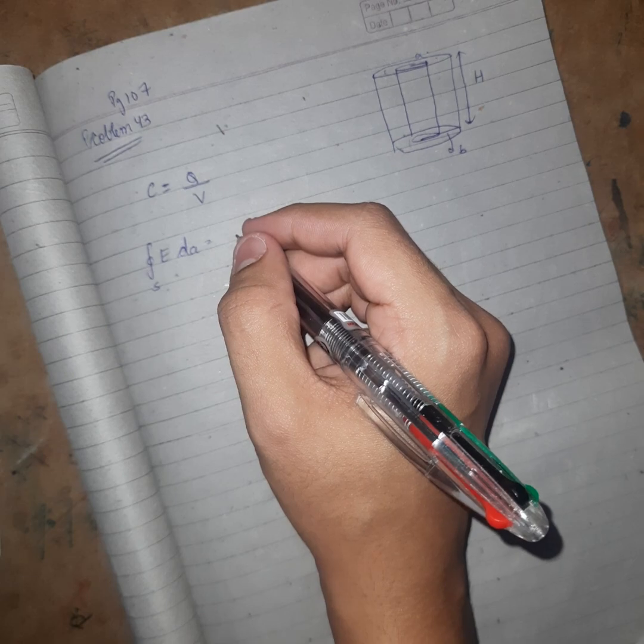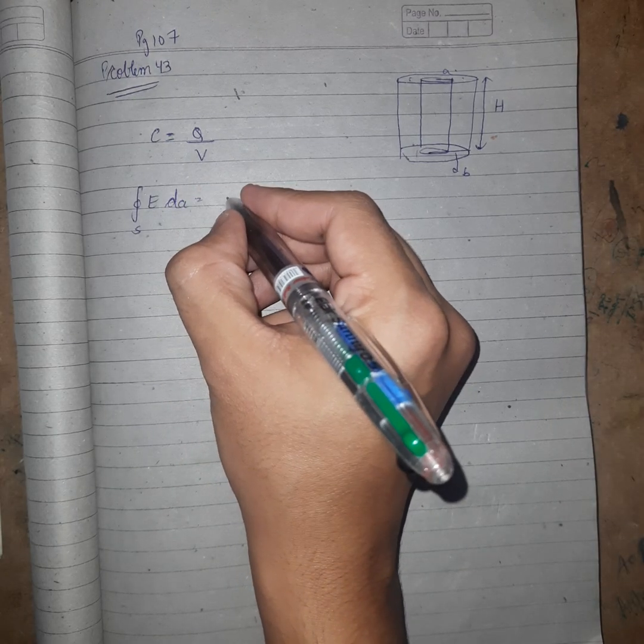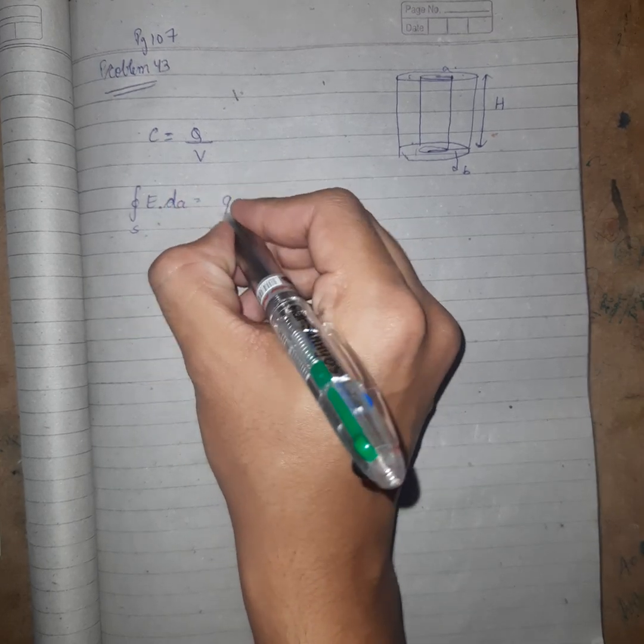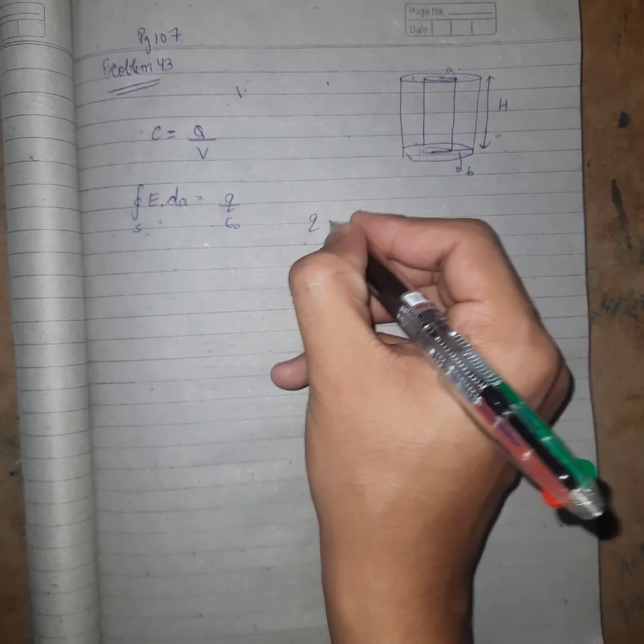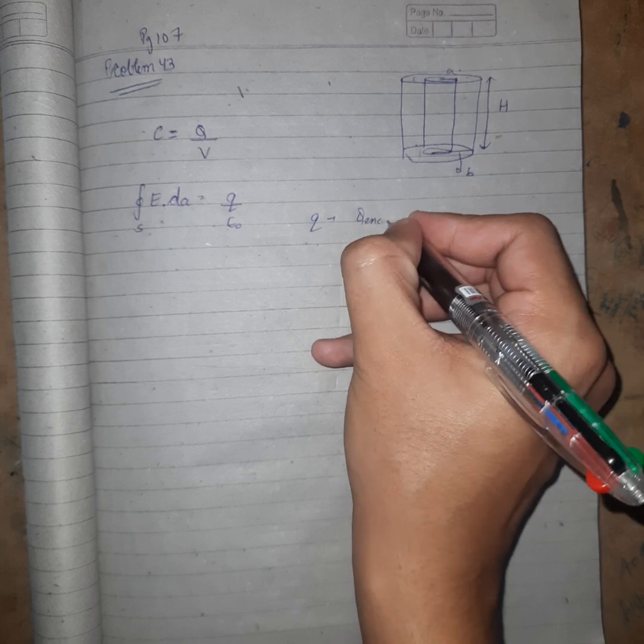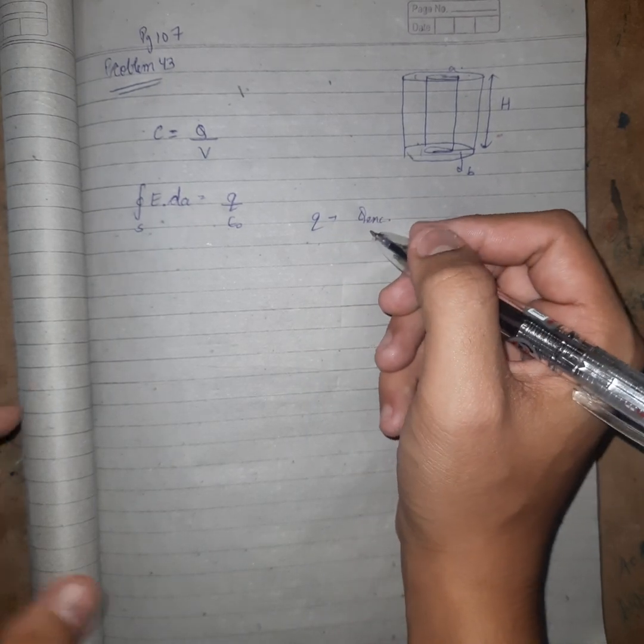So we get E·dA is equal to Q upon ε₀, where Q is Q enclosed inside the closed Gaussian surface. So we have E into surface area of a cylindrical tube is 2πr into h.